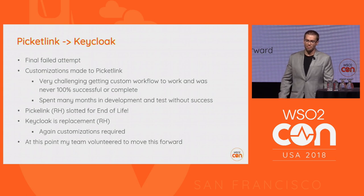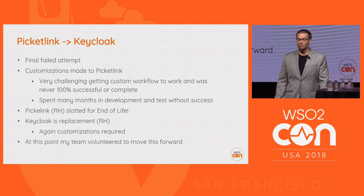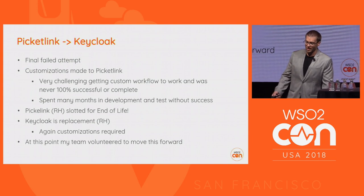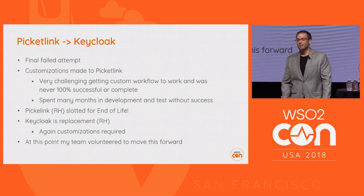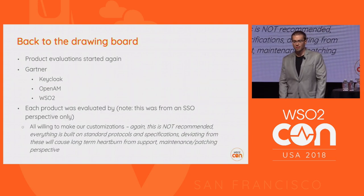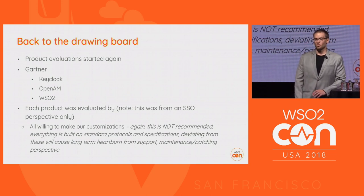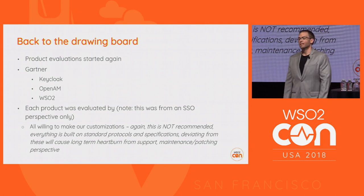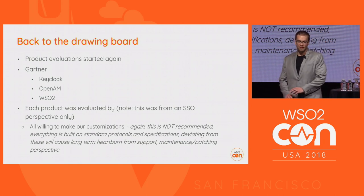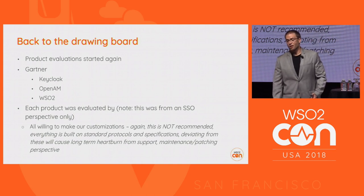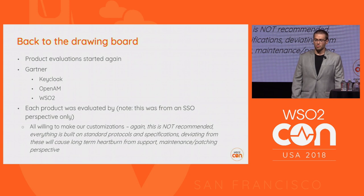At this point my team volunteered — well, I voluntold my team. We scrapped the whole project and went back to the drawing board. I didn't like the decision of PicketLink; I thought it was flawed. So I said, let's bring in Gartner, let's see what they have to say. Based on cost and all these other factors, Gartner pointed us to KeyCloak — which I wasn't a fan of — OpenAM, and WSO2.